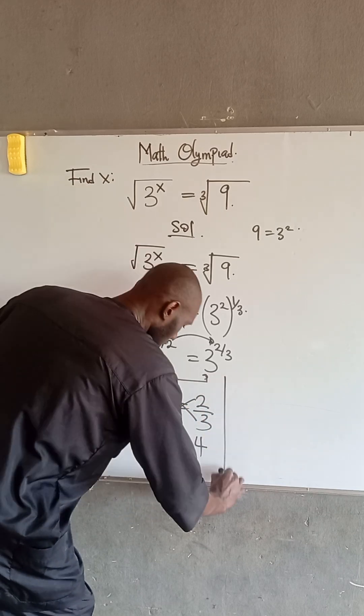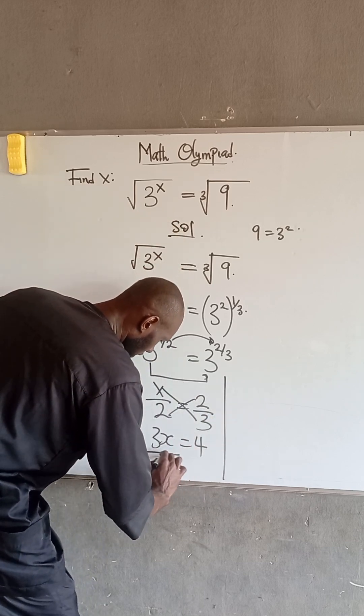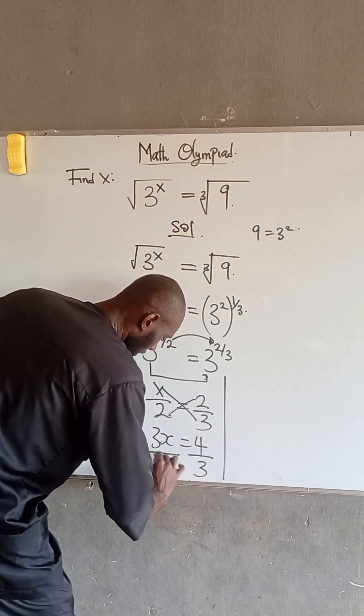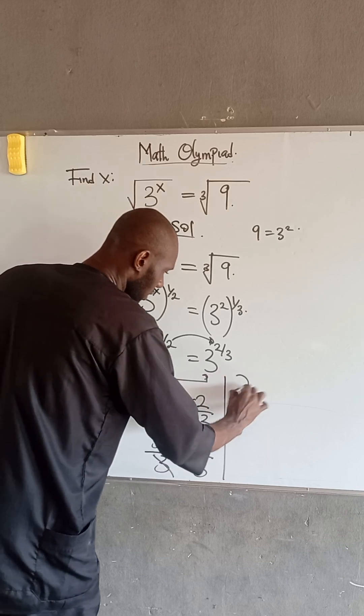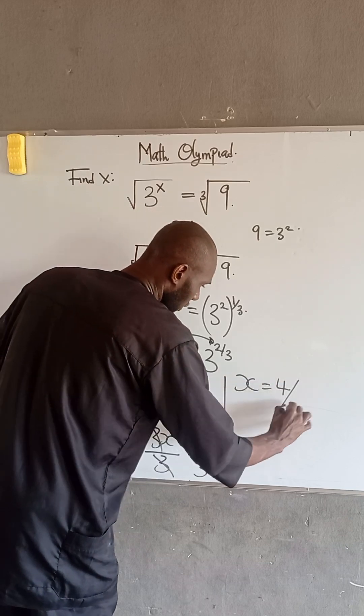It is obvious that if we divide both sides by 3, 3 will cancel itself. Therefore, x is equal to 4 divided by 3.